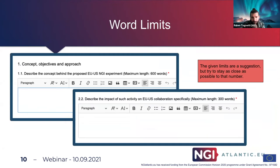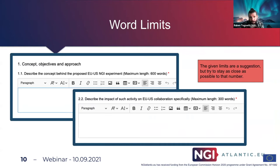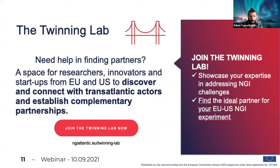One specific thing we've been asked about: word limits. In some fields it says maximum 600 words, others say 300 words. These limits are flexible — they're suggestions to help evaluators in reviewing your applications. Please try to stay as close as possible to that number. If you're looking for partners, we have the TwinningLab, where we list projects from Europe and the United States so you can contact coordinators directly through the platform. In the near future, we're reshaping this platform into a showcase for projects related to the NGI world.